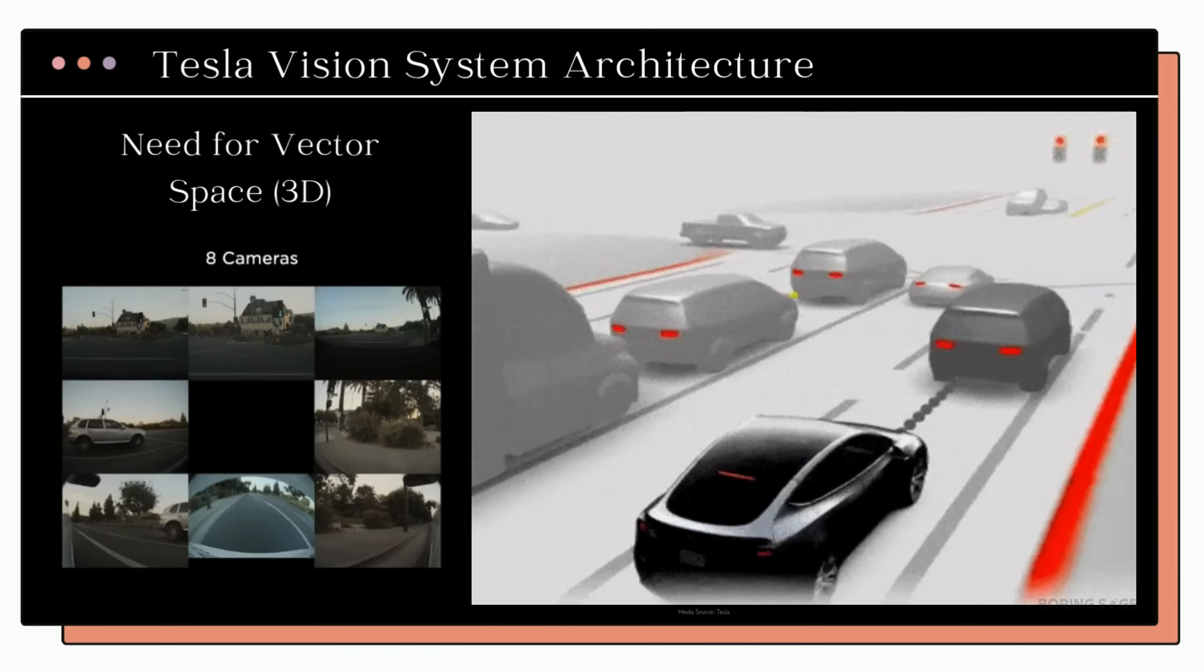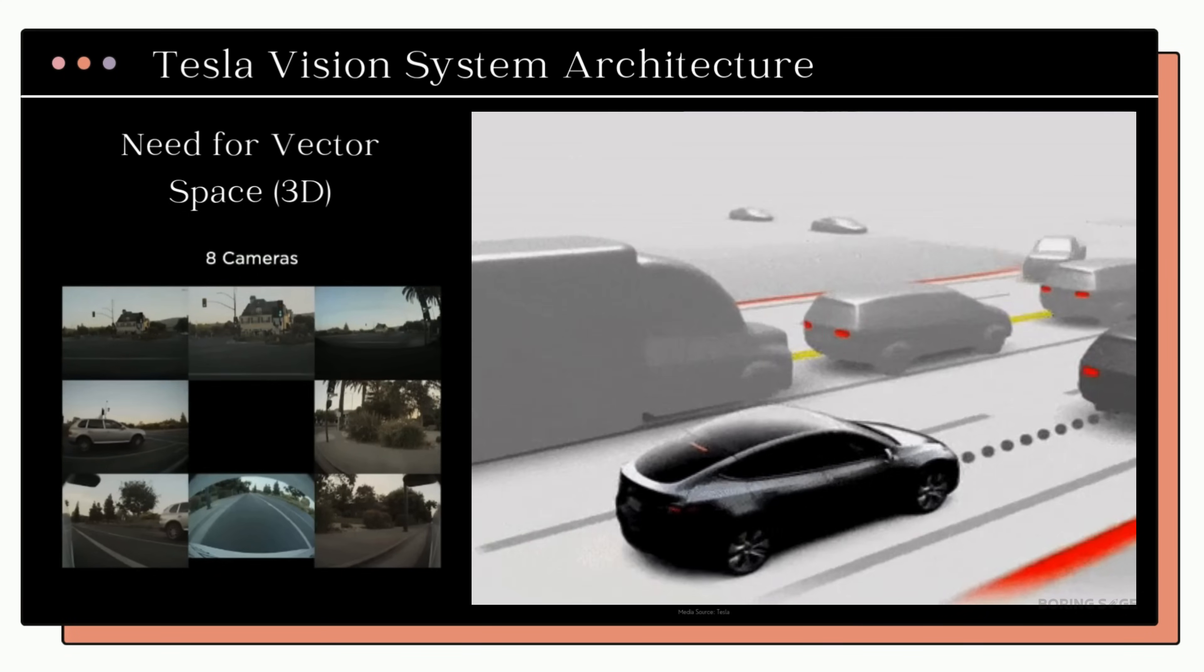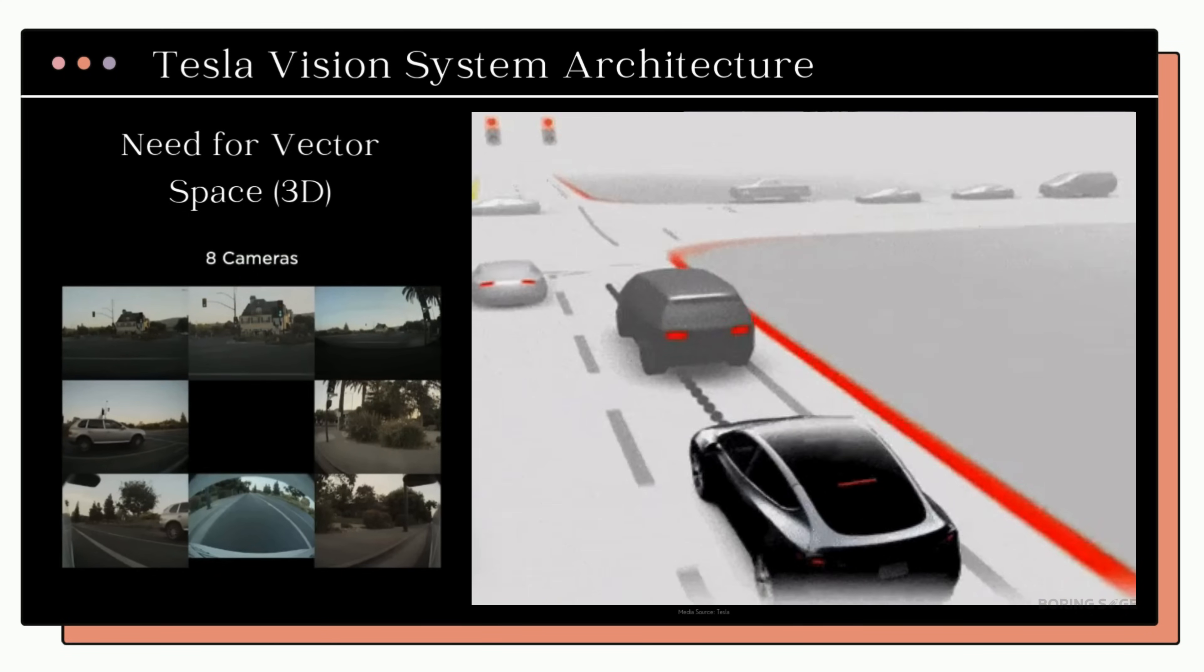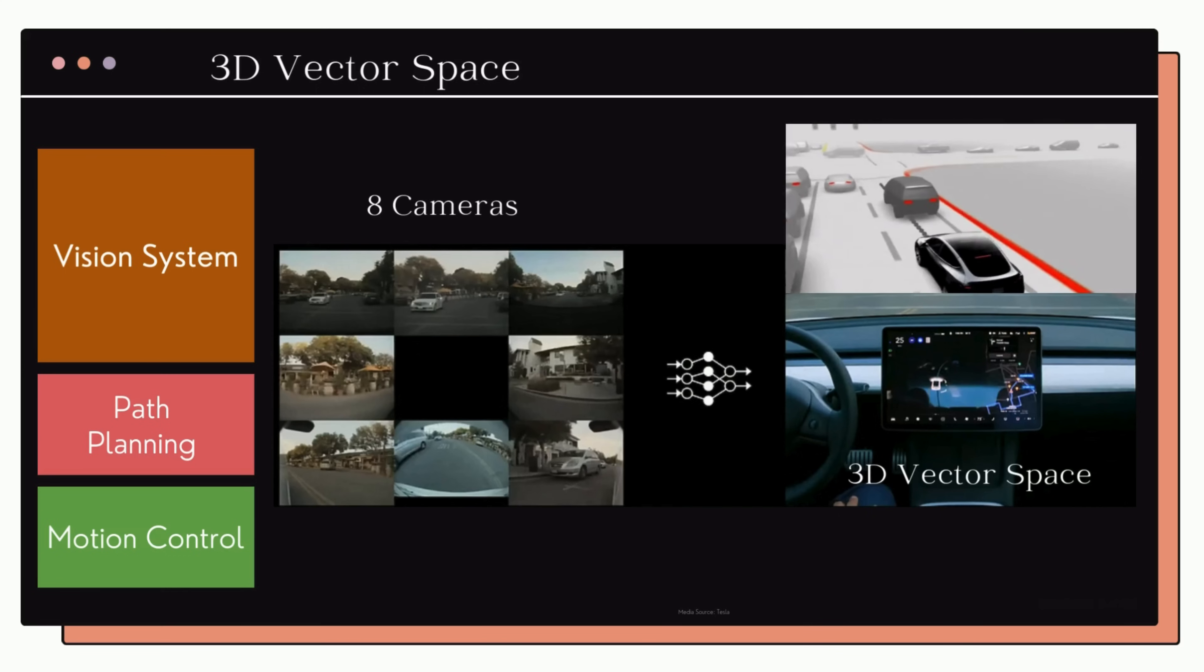That's where the team decided to add computer vision techniques powered by artificial neural networks. Using computer vision, Tesla processes these multiple camera feeds on the left through a series of neural networks which combine them into a single unified 3D vector space that you see on the right. Think of this as a detailed 3D map that replicates the real world in a way that the car can understand and navigate through with high precision.